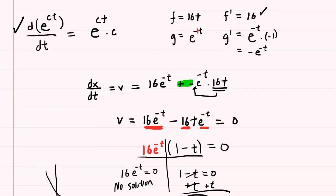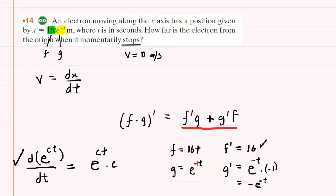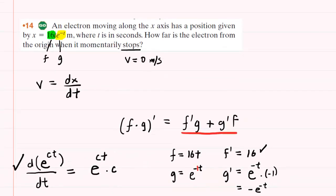Now that we have the time, we can go back and find the position. Remember, it wanted how far is the electron from the origin, so it's asking you to find a position. We go back to our position function and we simply plug in the one second that we obtained. So we would have x equals 16 multiplied by one and then e raised to the negative one. And this will give us our position in meters.